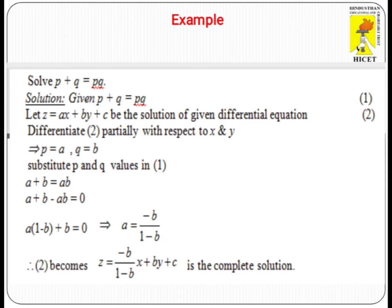From the equation, we can obtain A or B in terms of B or A. Here, I am going to find out A. Taking A terms to the left side and all others to the right side, A minus AB equals minus B. Taking A outside, A(1 - B) = -B. So A equals -B divided by (1 - B).